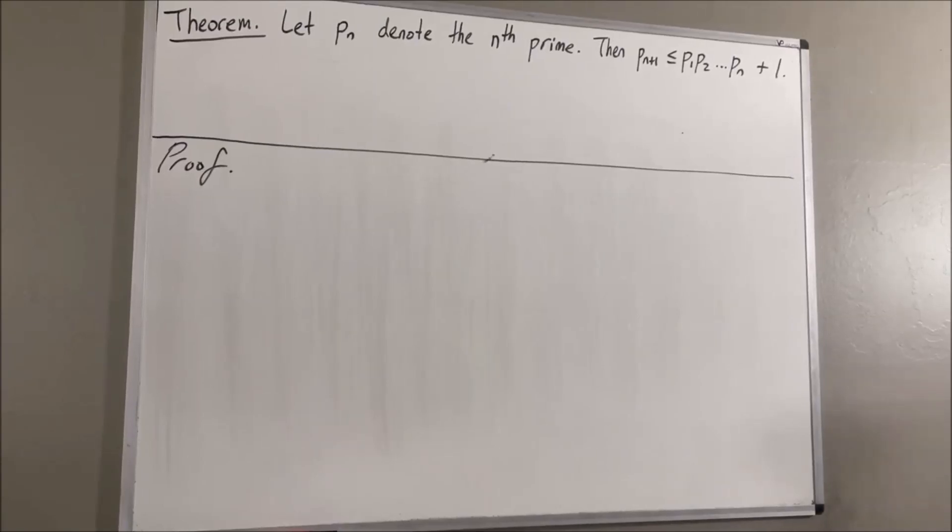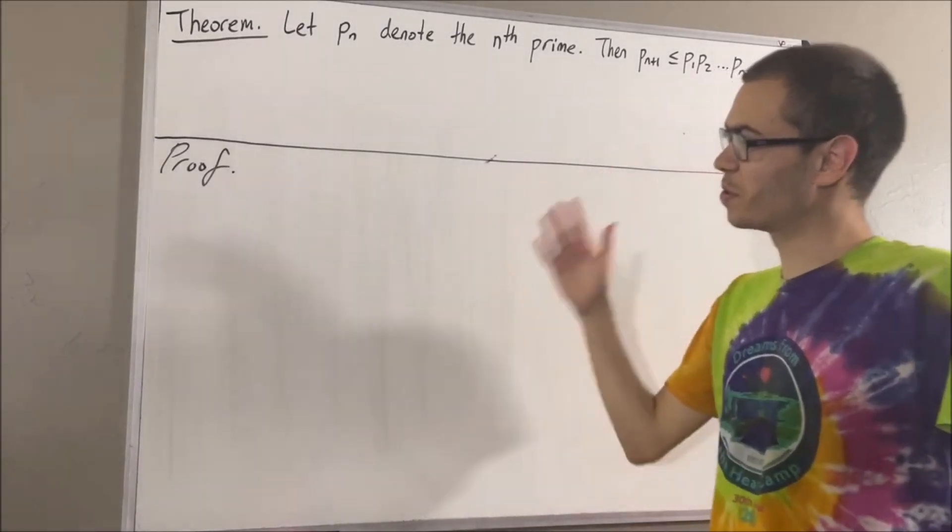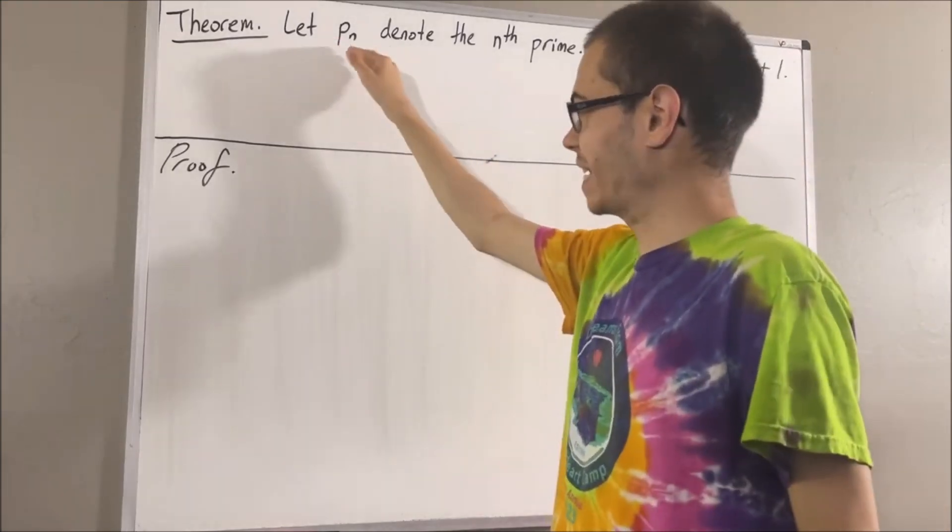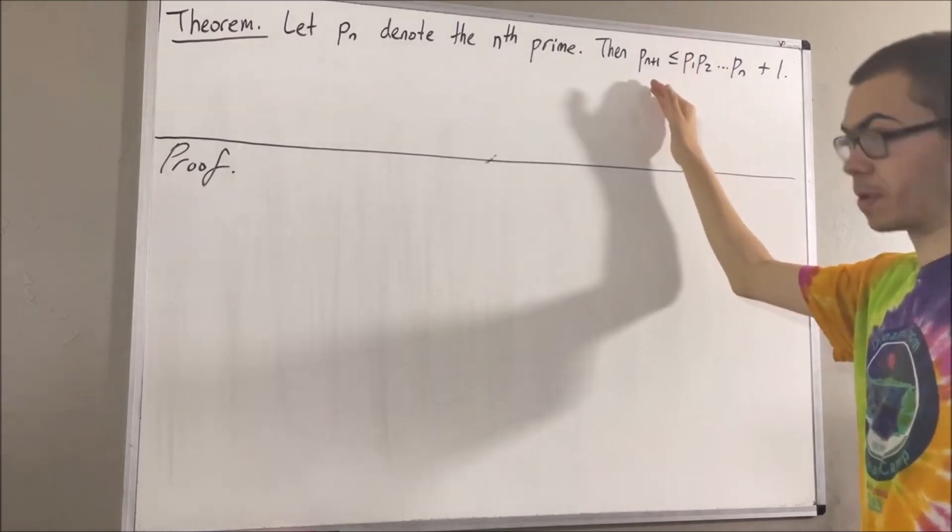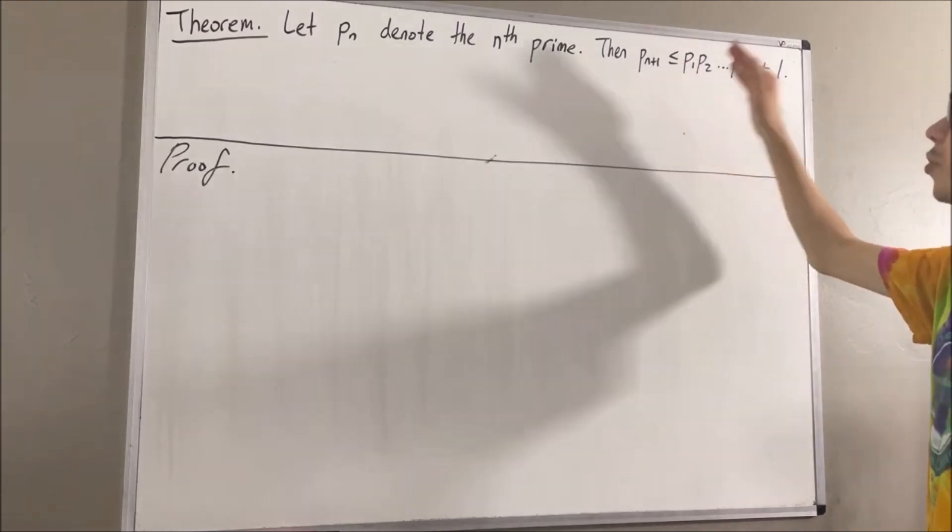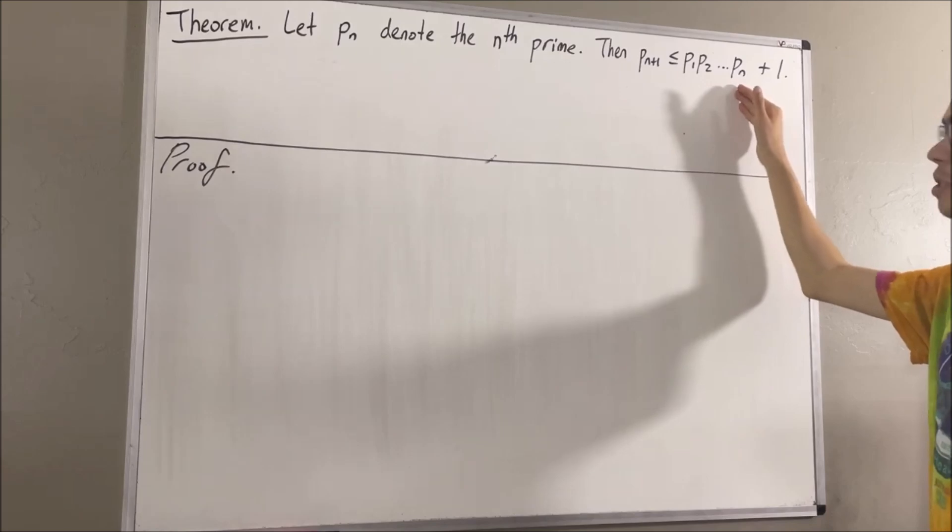Hello! In this video, we are going to prove the following theorem. Let P_n denote the nth prime number. Then, the n+1th prime number is less than or equal to the product of the first n prime numbers plus 1.